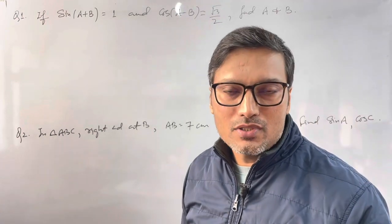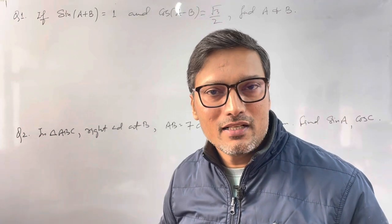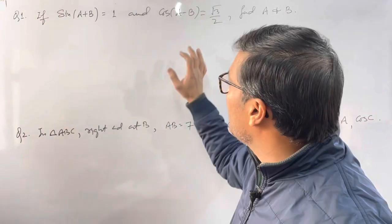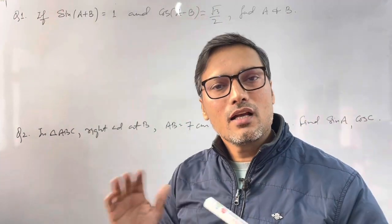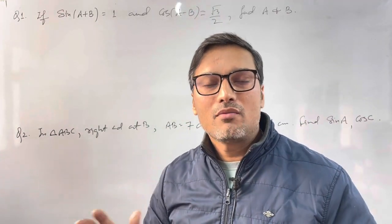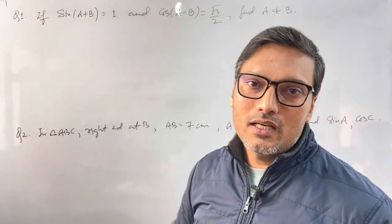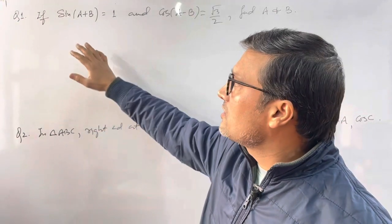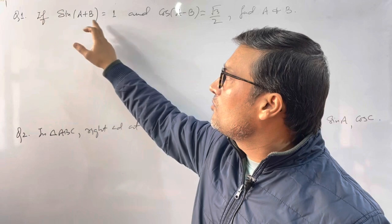This is not exactly the same terms — there is something different — but the answer pattern and concept is the same. Here I have a sine ratio, here I have a cosine ratio, but the pattern and concept is the same. How do you tackle this question? First, understand the question. Sin(A+B)...